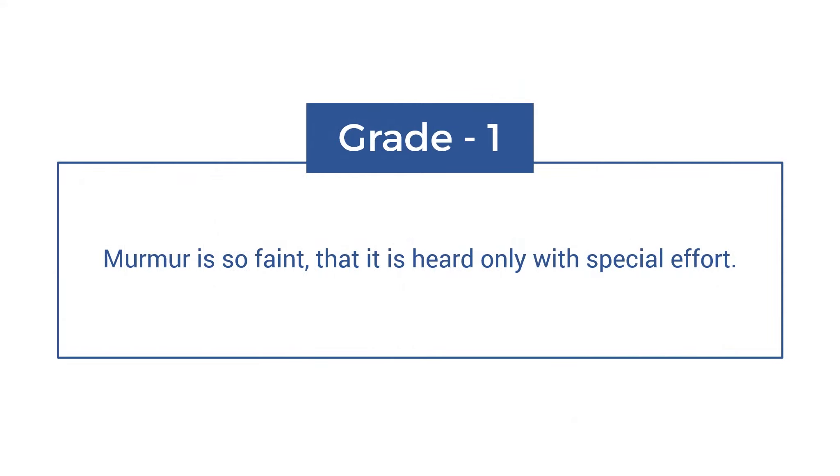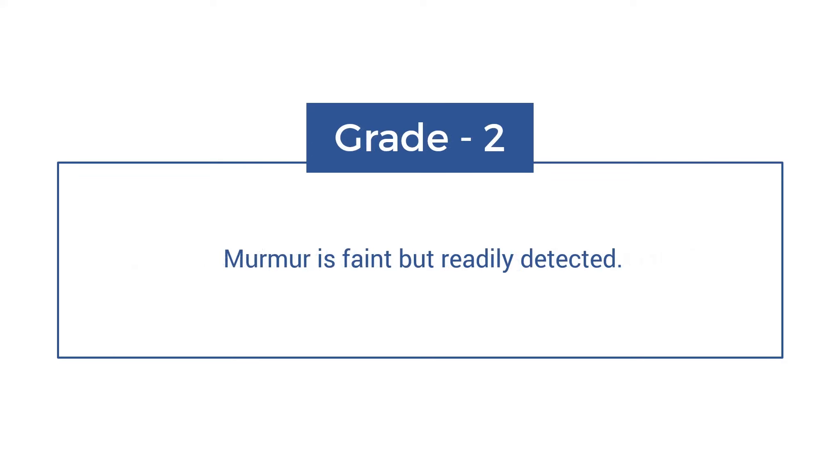Grade 1: murmur is so faint that it is heard only with special effort. Grade 2: murmur is faint but readily detected.